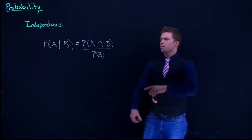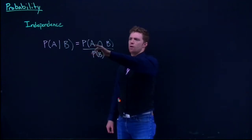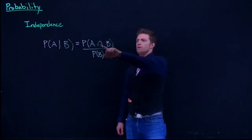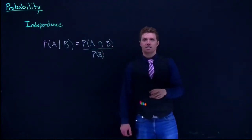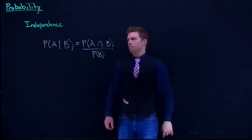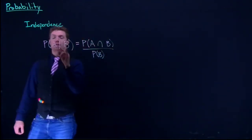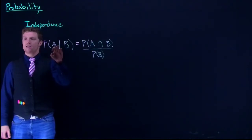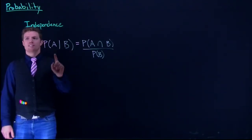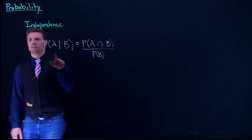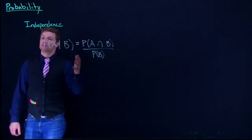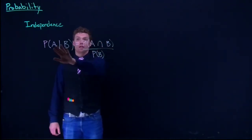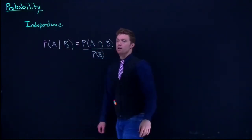One thing to note: the intersection of A and B is identical to the intersection of B and A, so we can flip those around. However, flipping A and B in the conditional probability is a radically different thing — the probability of A given B is different from the probability of B given A.